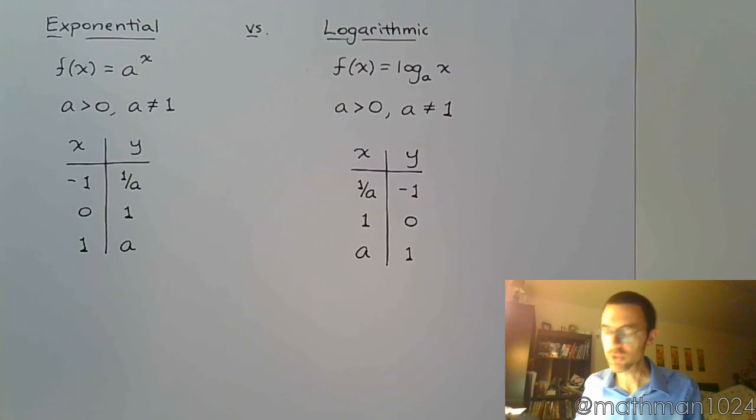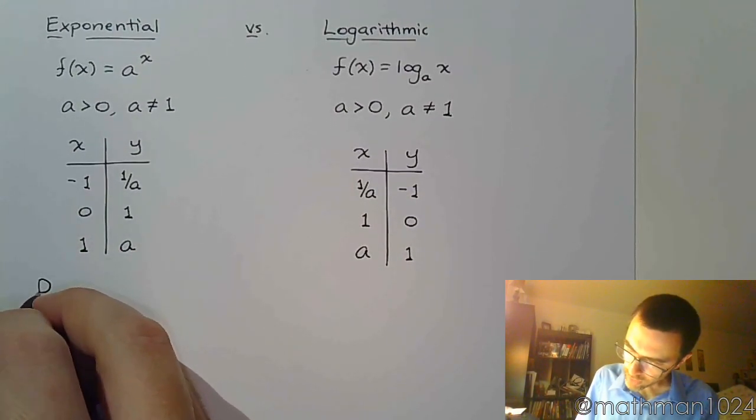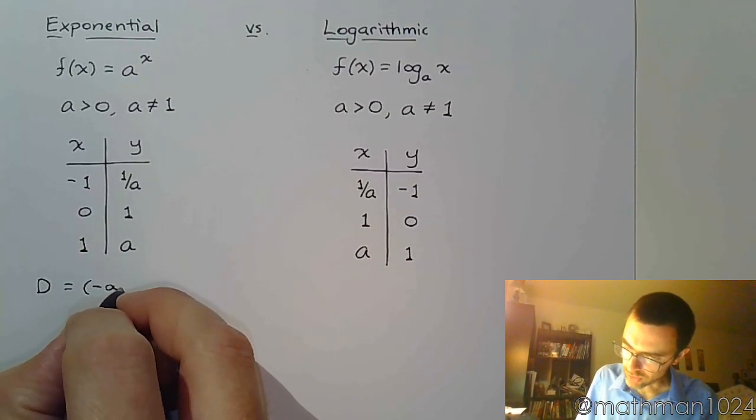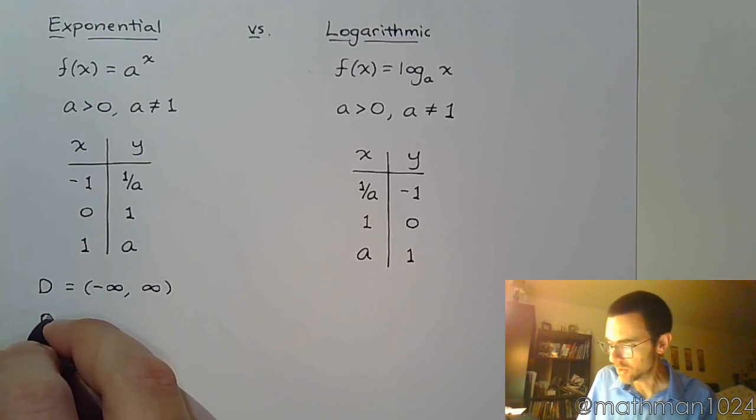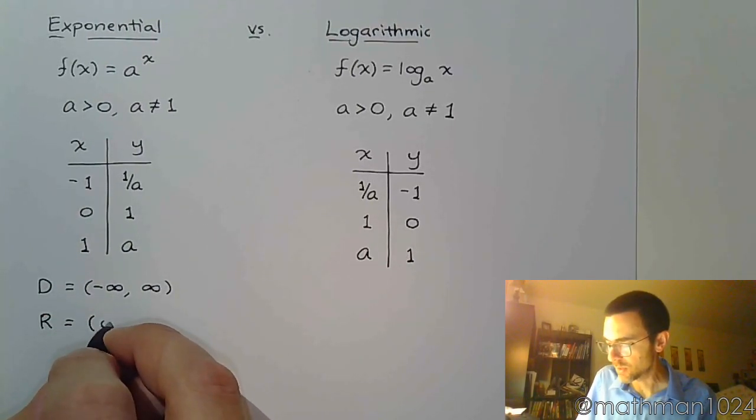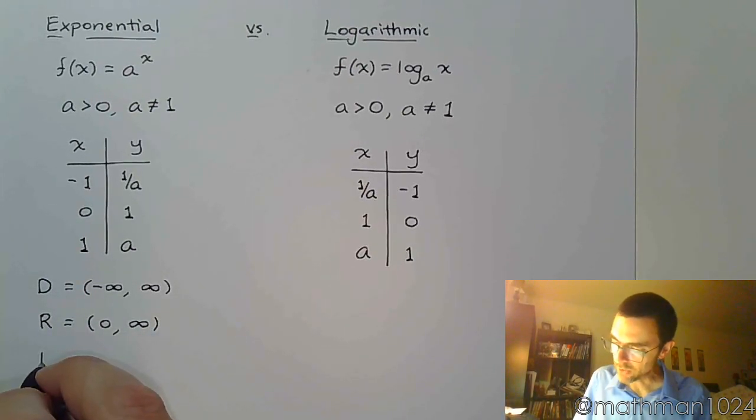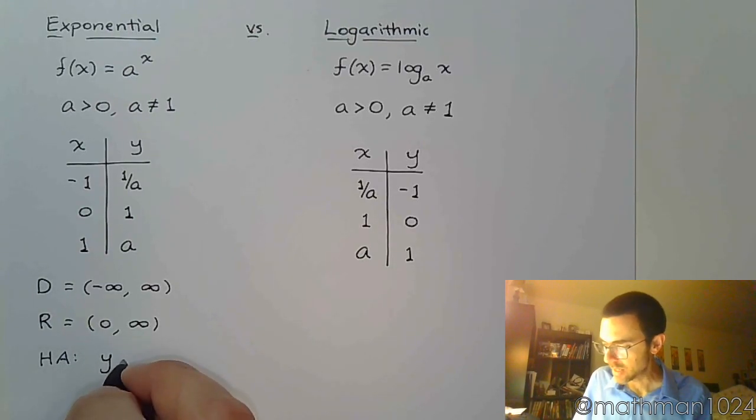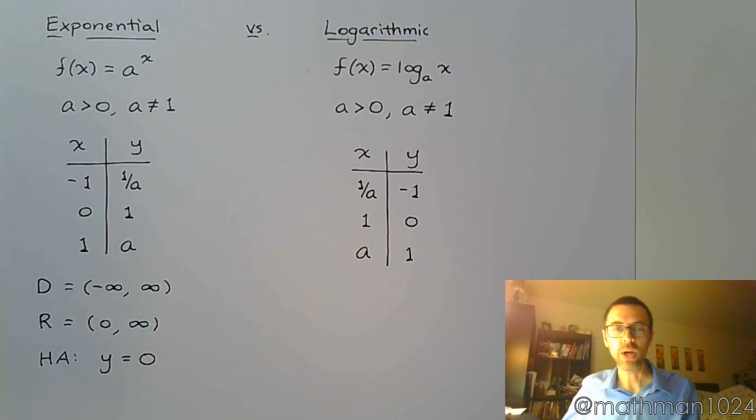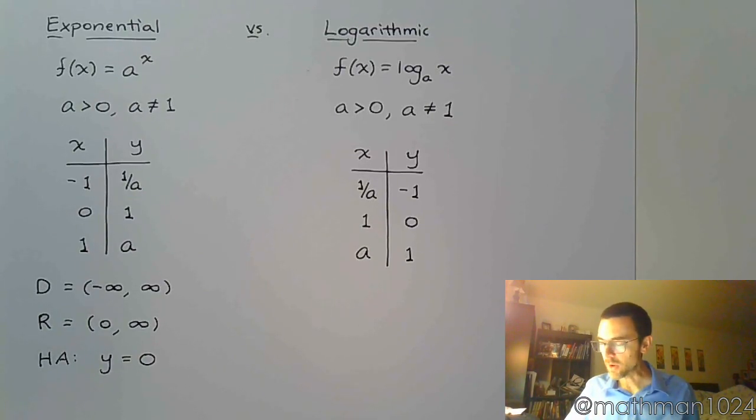For the exponential function, the domain was all real numbers, and the range was from zero, not including zero, to infinity. Remember, we have a horizontal asymptote when it comes to exponential functions, and that horizontal asymptote is y equals zero.